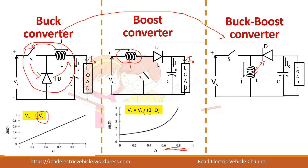As the duty cycle increases, the inductor will have some internal resistance RL. This RL will lead to some drop when current flows through it — I-squared-RL losses will be present. So in practical circuits the output voltage starts to drop after some duty cycle, because of this internal resistance.